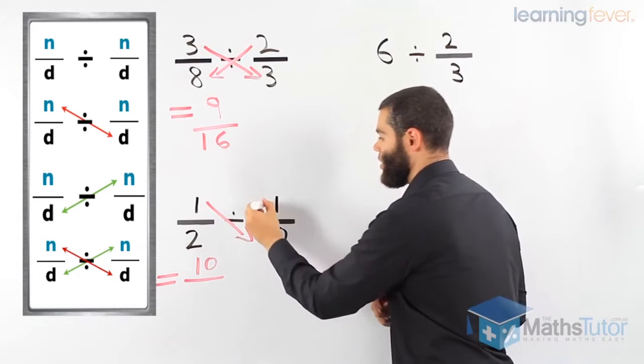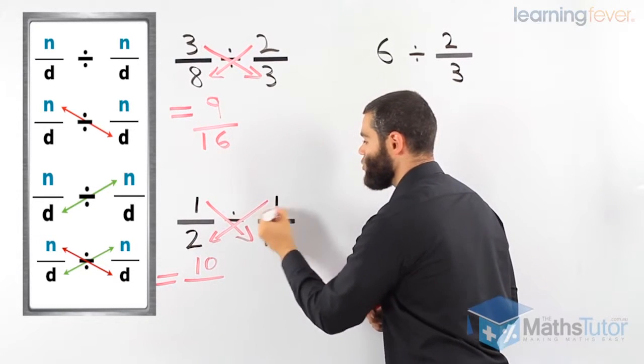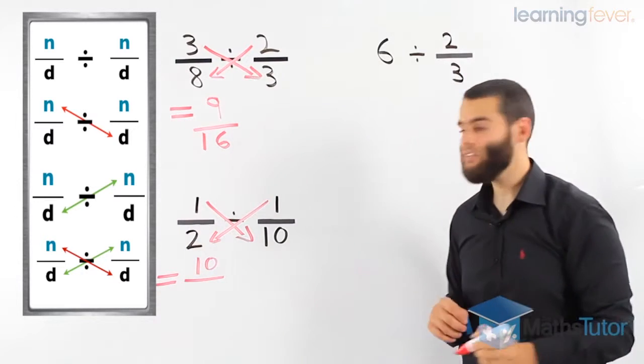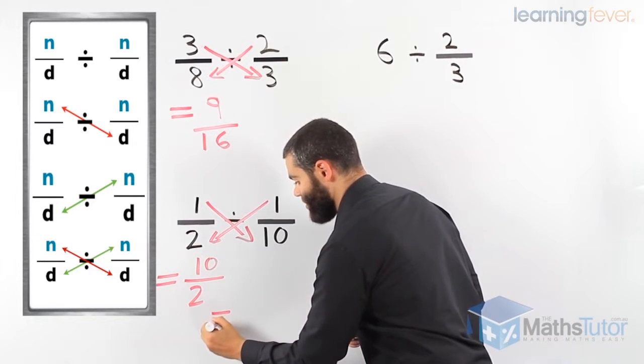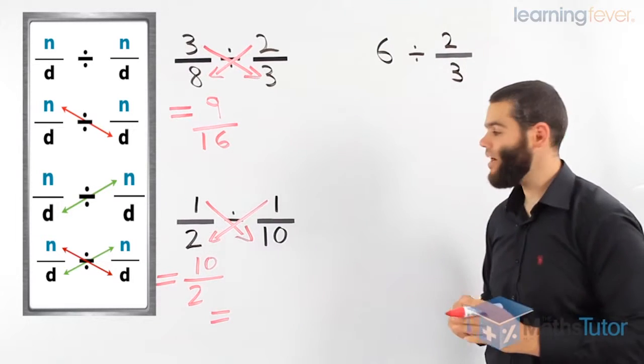And then we go down, second numerator times the first denominator, 1 times 2 is 2. Can we simplify? Of course, we can simplify.